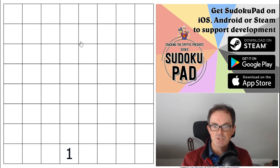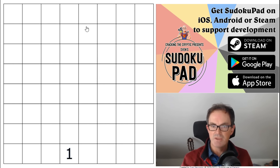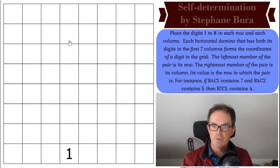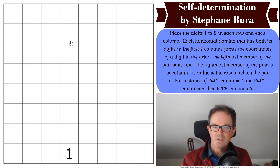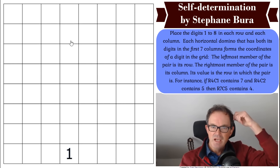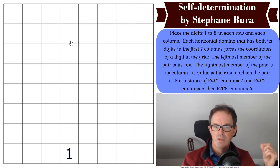Place the digits 1 to 8 in each row and each column. There are no boxes. "Each horizontal domino that has both its digits in the first seven columns forms the coordinates of a digit in the grid." The leftmost member of the pair is its row, the rightmost member is its column, and its value is the row in which the pair is.